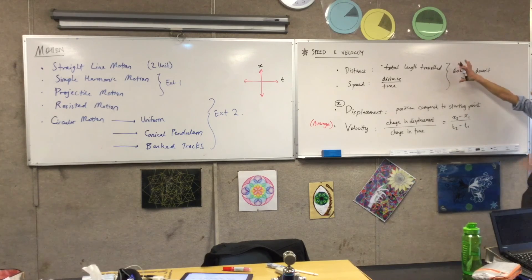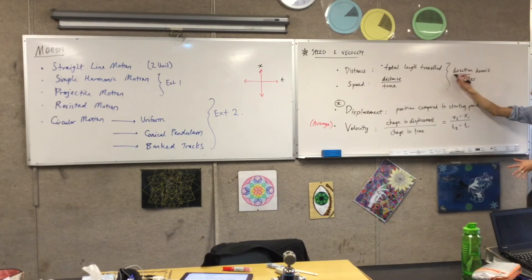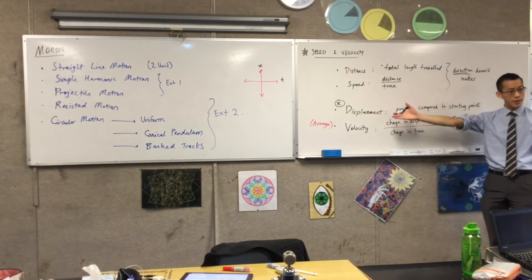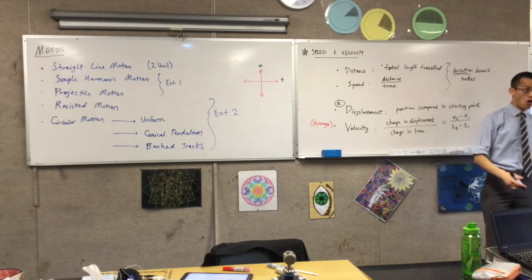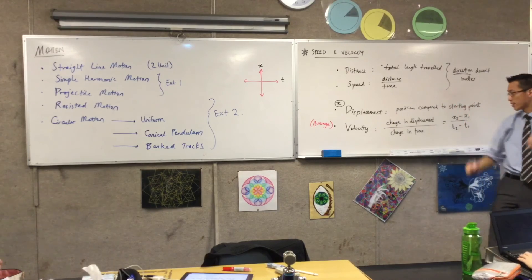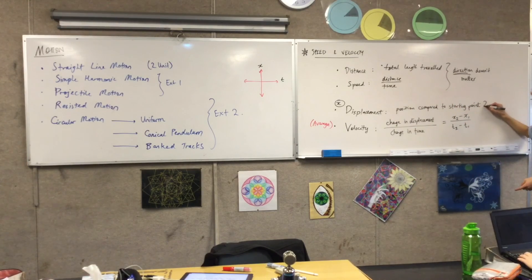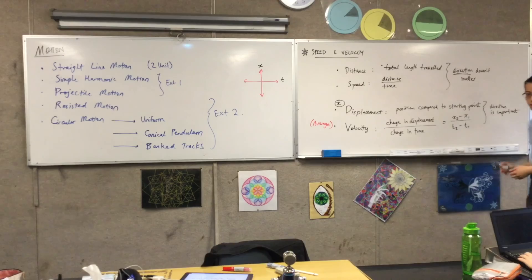And like I said, the difference between these two things is whether you're interested in direction or not. So displacement can be negative. I can go in the opposite direction from which way I'm facing. And it's the same thing with velocity. So here, direction is important.